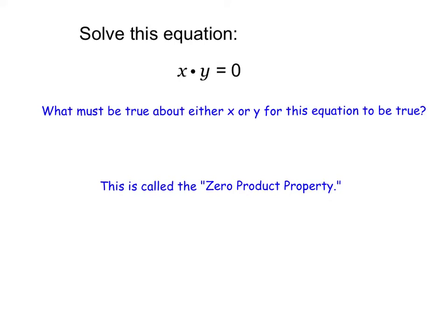In this video, we're going to look at something called the zero product property, and then solving by factoring. Let's start out with this question: solve this equation, x times y equals zero.